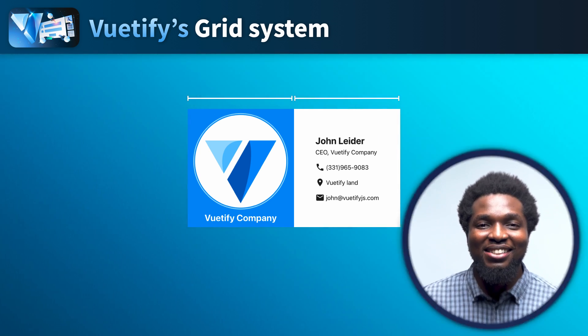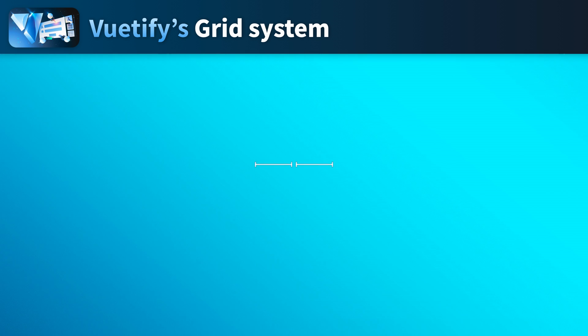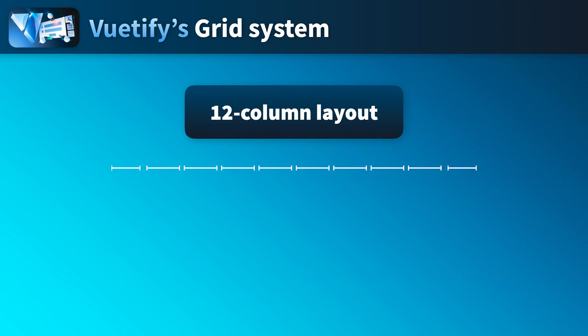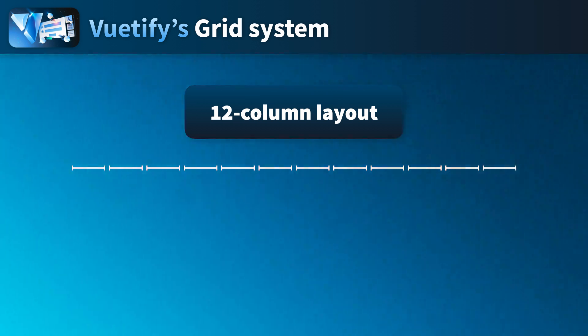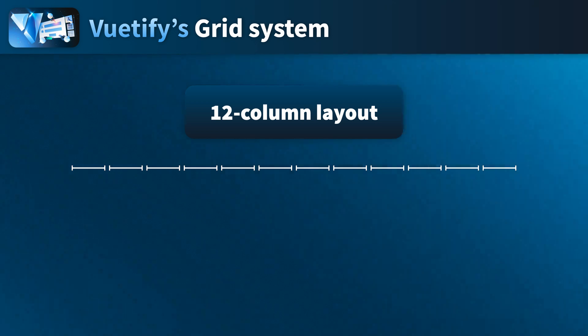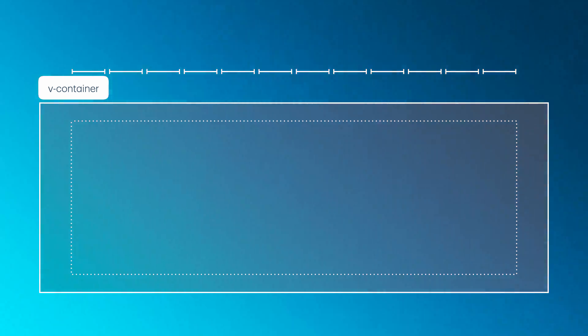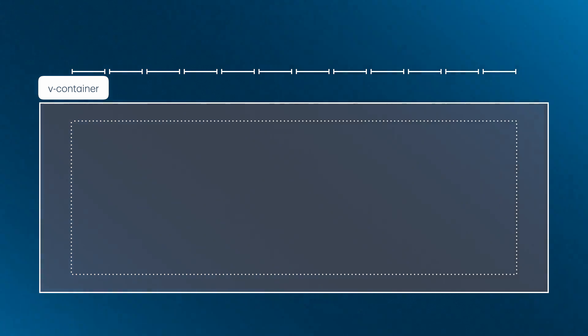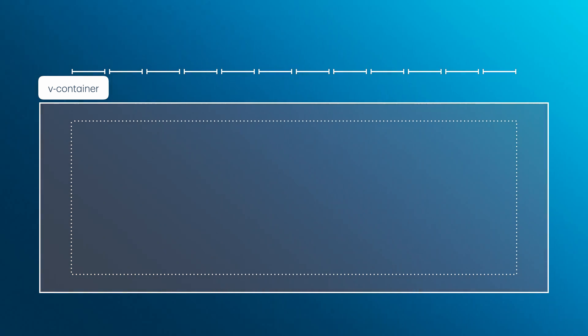Similar to other popular frameworks like Bootstrap, Vuetify's grid system is based on a 12-column layout. This means the screen is divided into 12 equal columns, and you can specify how many columns each element in your layout should span. The grid is designed to be fully responsive. Let's take a look at the main components that make up the grid system. First, we have the V-container component — this is the most basic layout element wrapping your application content. It can be fluid, taking 100% of the screen's width, and it provides padding ensuring that your content isn't flush against the edge of the viewport.